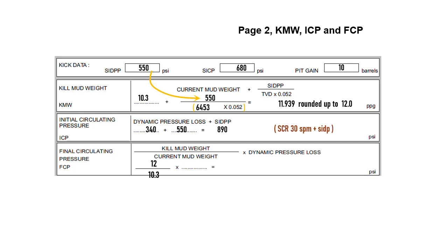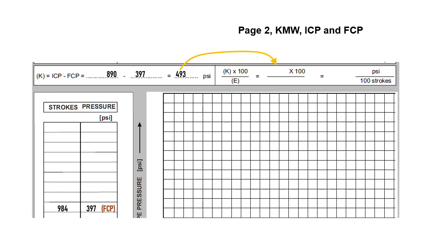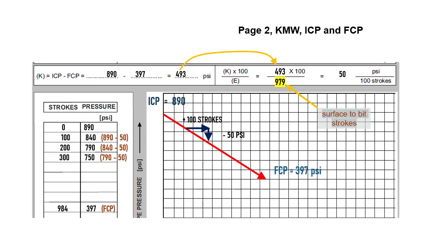Our FCP is kill mud weight 12 divided by 10.3, multiplied by SCR 340, equal to 397 psi. When we pump kill mud into the string, the drill pipe circulating pressure will decrease gradually from ICP 890 psi to FCP 397 psi, decreasing by 50 psi for every 100 strokes of kill mud pumped into the drill string. After reaching FCP, drill pipe circulating pressure is to be kept constant to maintain bottom hole pressure constant.